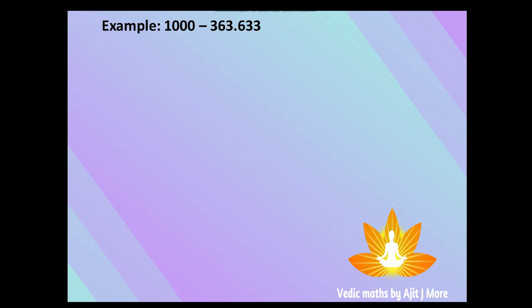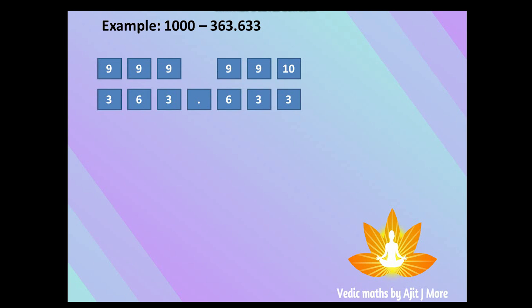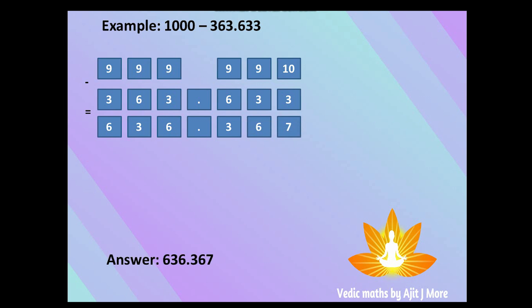One more example: 363.633. There are three digits before the dot, so the base is 1000. Note that here we subtract from the left side, unlike the traditional right-to-left method. So: 9−3=6, 9−6=3, 9−3=6, dot as-is, 9−6=3, 9−3=6, 10−3=7. The complement of 363.633 is 636.367.